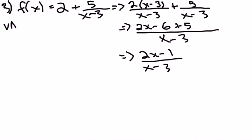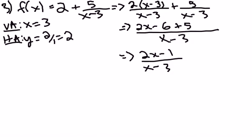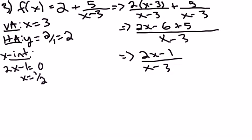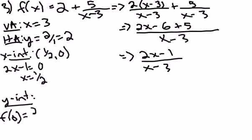Same questions here. The vertical asymptote will be x equals 3, where the denominator is 0. The horizontal asymptote — the degrees are the same, so you take the leading coefficient of the top divided by the leading coefficient of the bottom. That's 2 divided by 1, giving a horizontal asymptote of 2. Setting the numerator equal to zero gives an x-intercept of one-half. Plugging in zero for x gives a y-intercept of one-third.